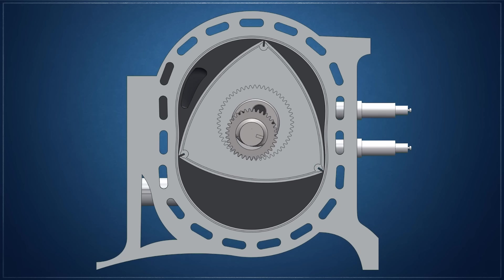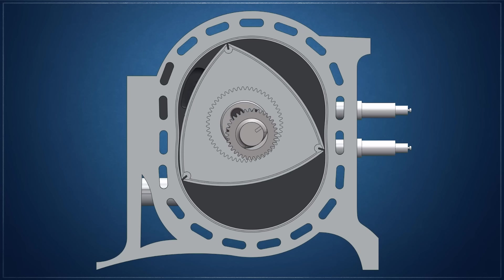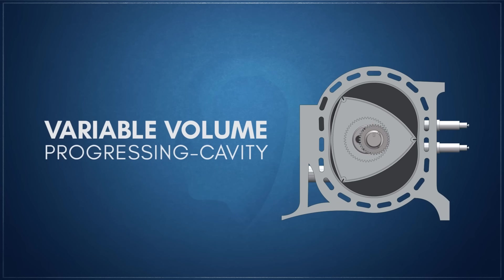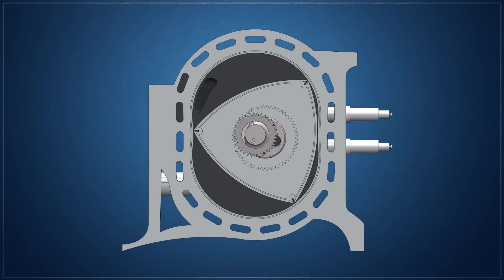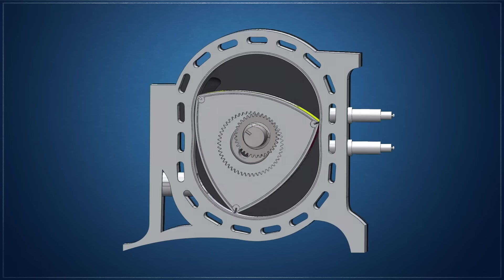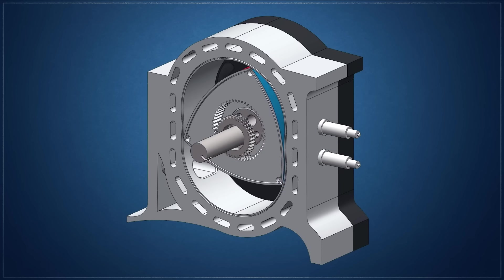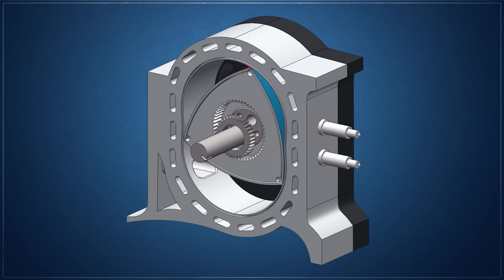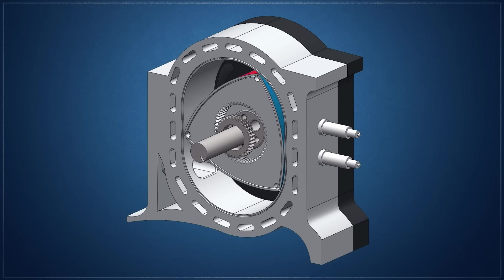Because of the unique configuration of a rotary engine, they're classified as variable volume progressing cavity systems. Each rotor has three faces, and each face has three cavities of volume per housing. In effect, each face of the rotor sweeps its own volume as the rotor moves in an eccentric orbit within the housing.